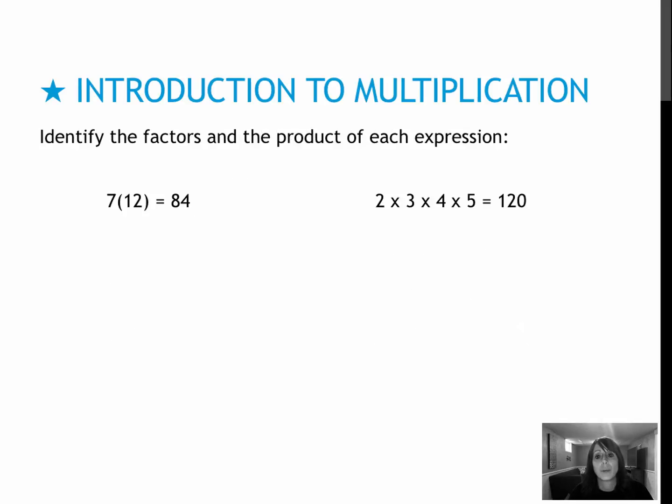Try these on your own, then press play to see how you did. Notice on these, they've already given me the product, so I did not have to simplify. I'm just identifying the factors and the product. So the factors, in this case, would be seven and 12. And the product would be 84.